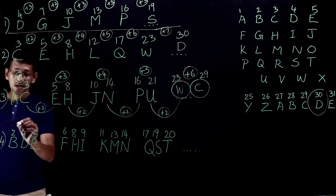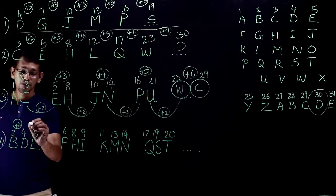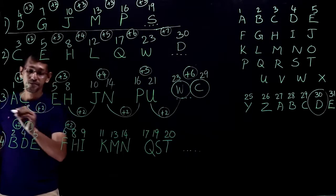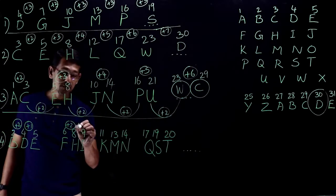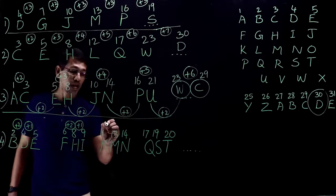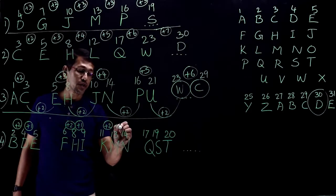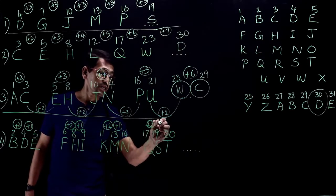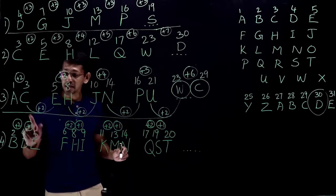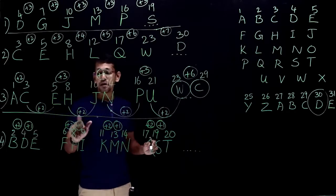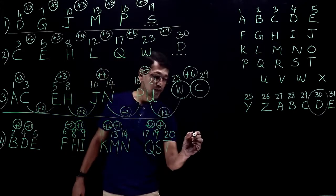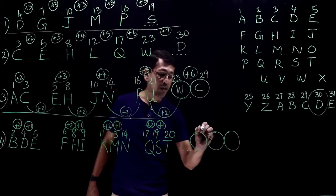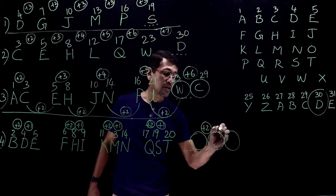So the pattern here: 2 plus 2 equals 4, 4 plus 1 equals 5. 6 plus 2 equals 8, 8 plus 1 equals 9. 11 plus 2 equals 13, 13 plus 1 equals 14. 17 plus 2 equals 19, 19 plus 1 equals 20. So the pattern here is plus 2, plus 1. Plus 2, plus 1. Plus 2, plus 1. So in the next set of 3 letters, what we have here is going to be the same pattern: plus 2, plus 1.